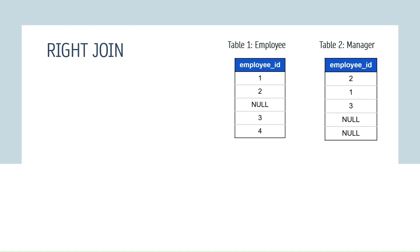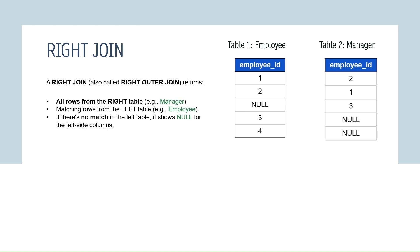Now let's move on to the right join. The right join returns all the rows from the right table — in this case the manager table — and only the matching rows from the left table, which is our employee table. If there is no match in the left table, it shows NULL for the left side columns, just like the left join but reversed.